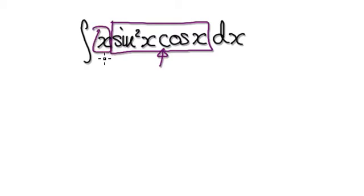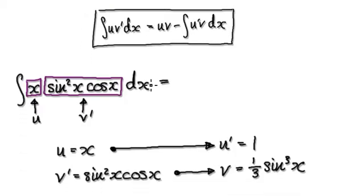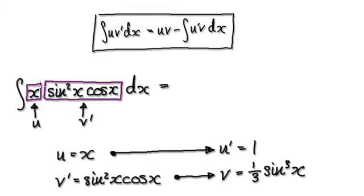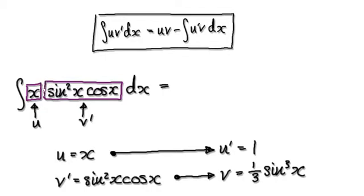Looking at this here, this can be easily differentiated, so you should have a clue that you should use integration by parts. Train yourself to recognize that this thing here can easily be integrated and this here can easily be differentiated. So use integration by parts — let u be x.